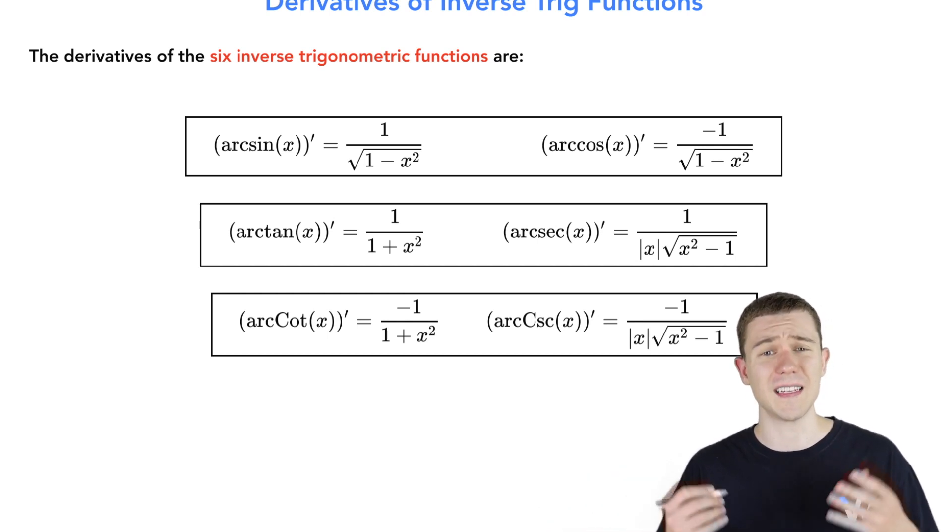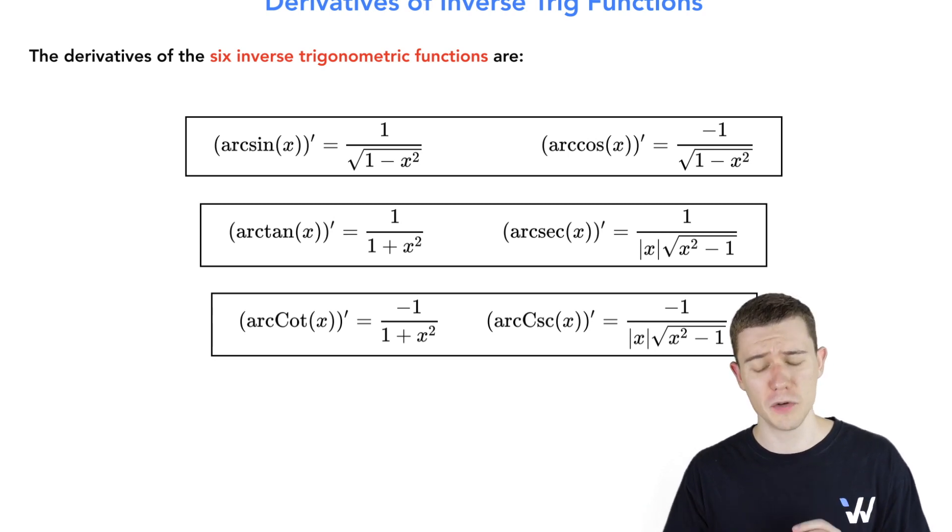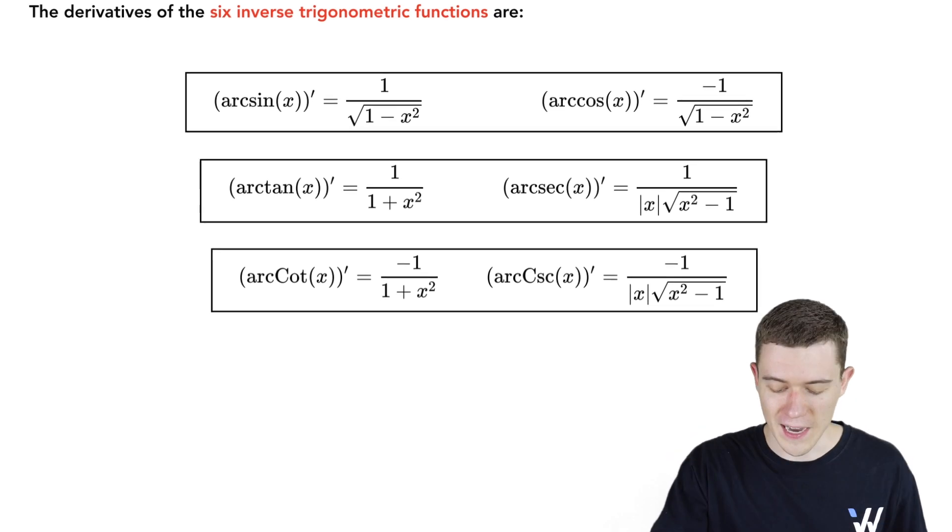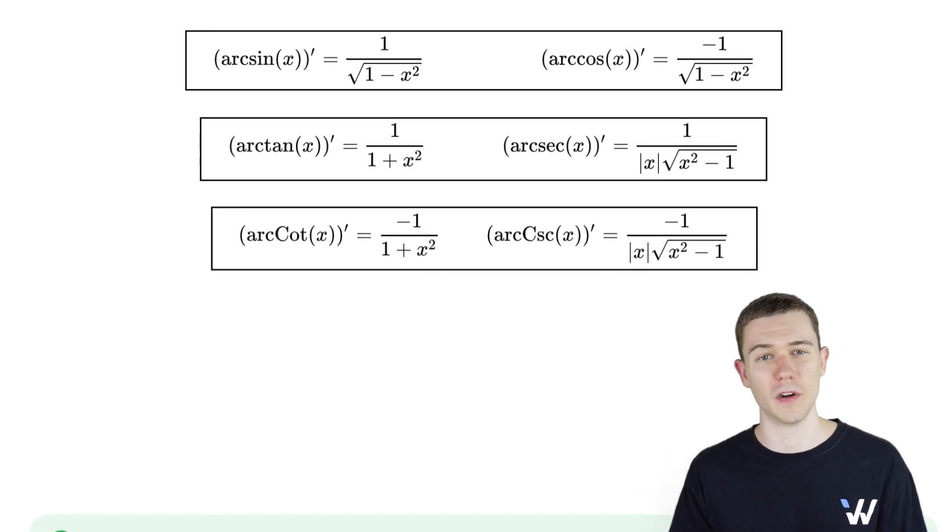The derivative of arc secant is the least common and the most confusing. It's 1 over the absolute value of x times the square root of x squared minus 1. As you might guess, the arc cosecant derivative is the exact same thing, just with a negative 1 on top.